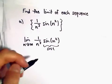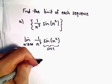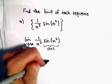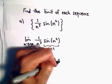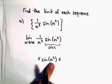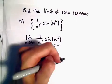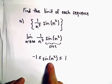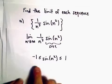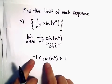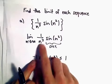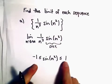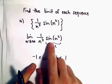What we can use in this case is the squeeze theorem. Sine of n squared, sine of anything, is always between positive 1 and negative 1. We're going to find a function that's smaller than 1 over n cubed sine of n squared, and a function that's bigger than 1 over n cubed sine of n squared.